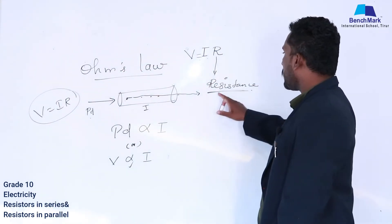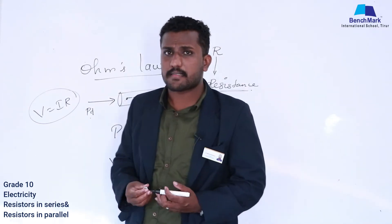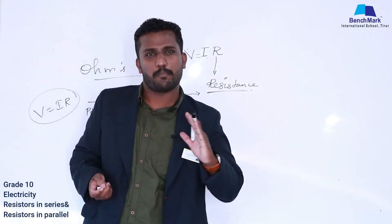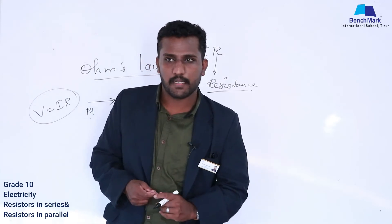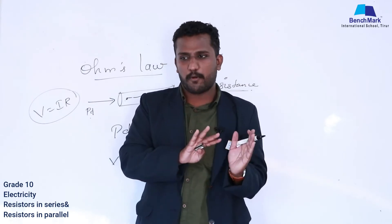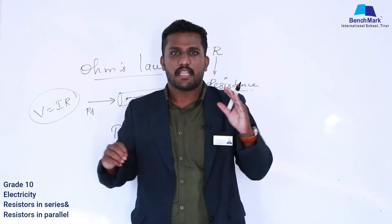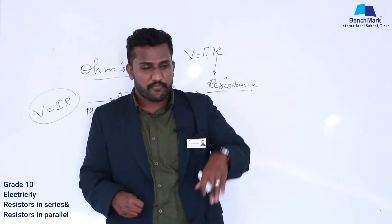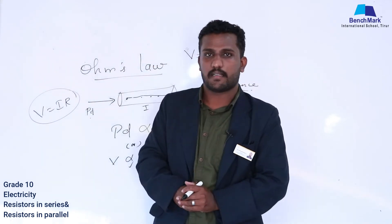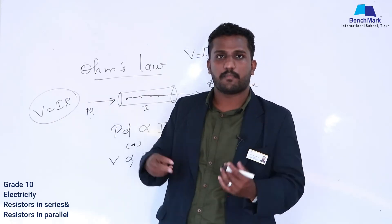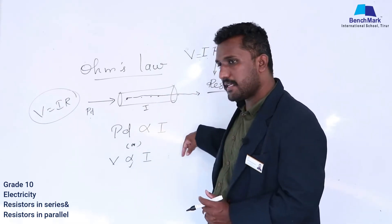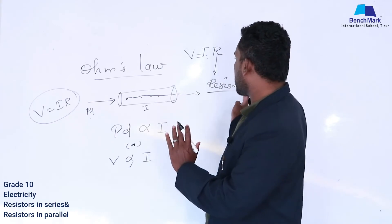What is resistance? Resistance is an opposing force which opposes the current. If there is current, resistance opposes and slows it down. The current flow will be less if there is more resistance. If resistance is less, current will be more. So current and resistance are inversely proportional.